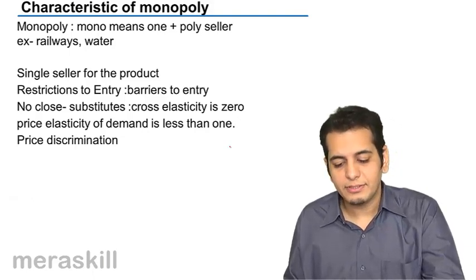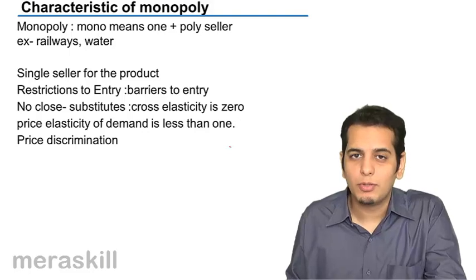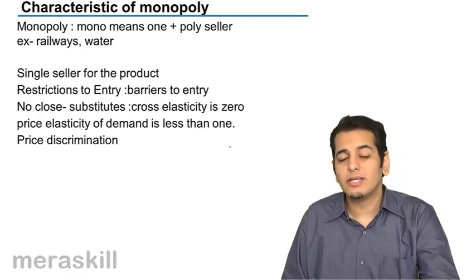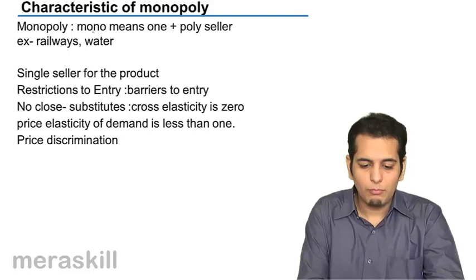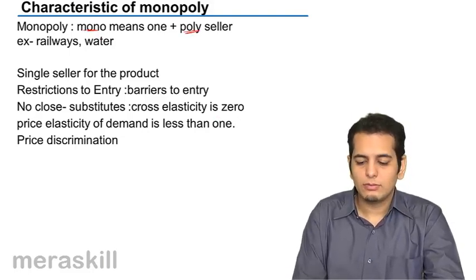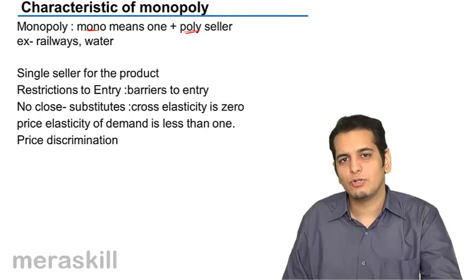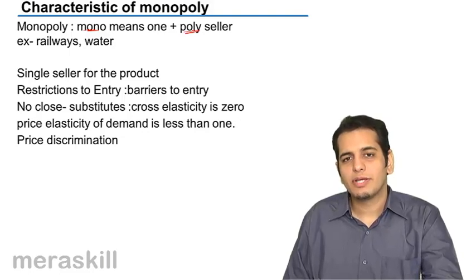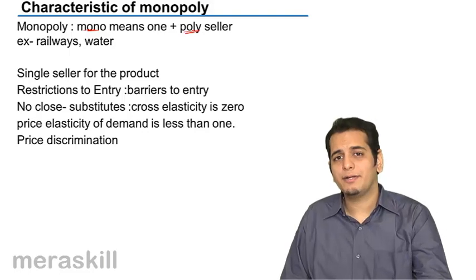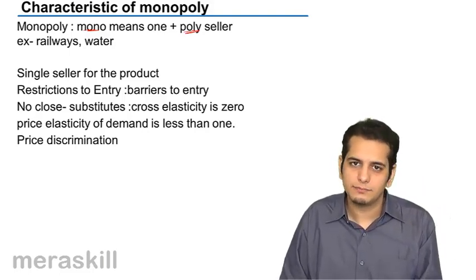Before going to characteristics, let's first understand what is monopoly. Monopoly means a single seller — 'mono' means one, 'poly' means seller. So monopoly taken together means a single seller. It's a market which is ruled by a single seller.